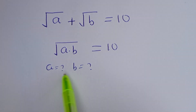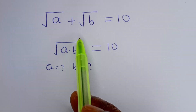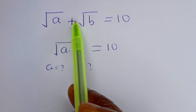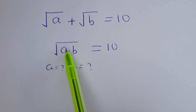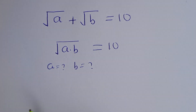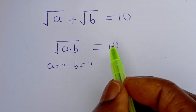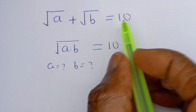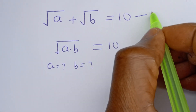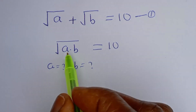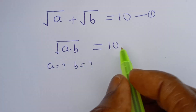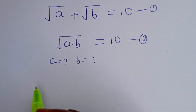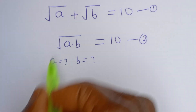I know how to solve for A and B in these equations. Equation 1: square root of A plus square root of B is equal to 10. Equation 2: square root of A multiplied by B is equal to 10. Let's call this equation two.